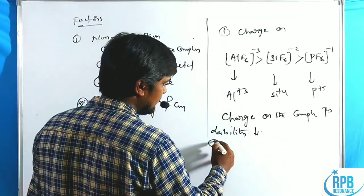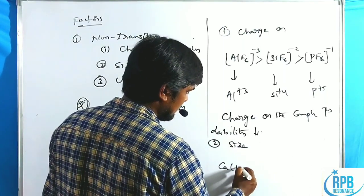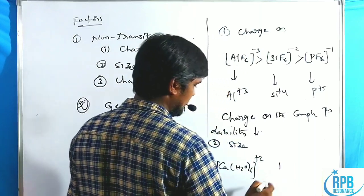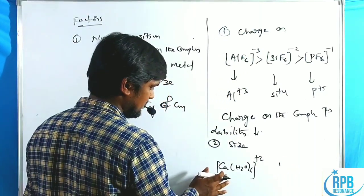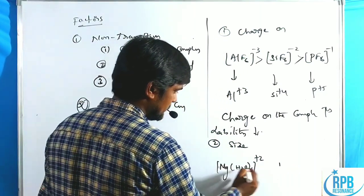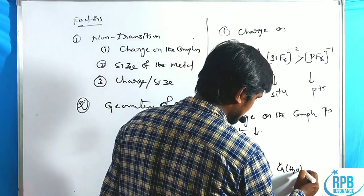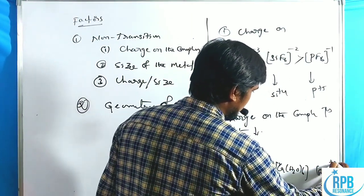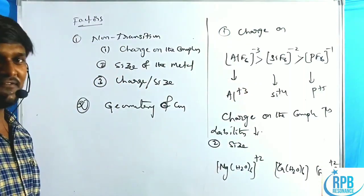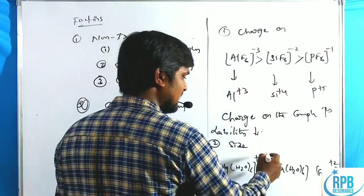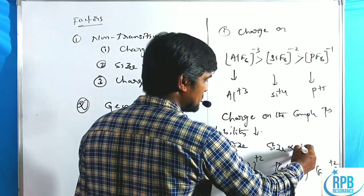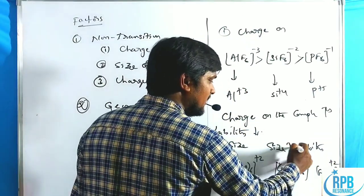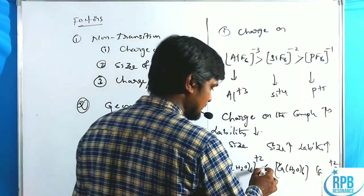Second thing: size of the atoms. Consider Mg(H2O)6 2+, Ca(H2O)6 2+, Sr(H2O)6 2+. From top to bottom, size of the cation increases. Size is directly proportional to lability — if size increases, then lability also increases.